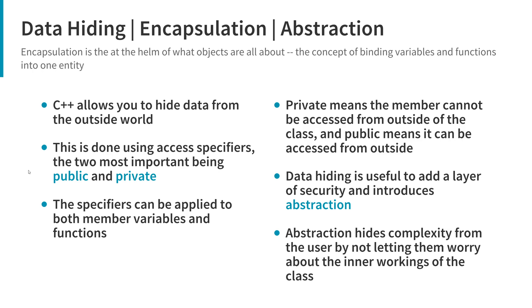Programming itself is an abstraction because computers only speak binary — zeros and ones — but we use a language like C++ to make the machine do what we want. Data hiding in classes is done with two important keywords: public and private. If a variable inside a class is public, anything outside the class can access it through the object. If it's private, it cannot be accessed from outside. We'll have a dedicated video on access specifiers soon.